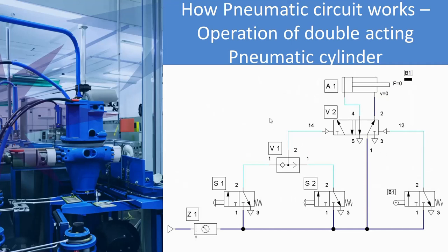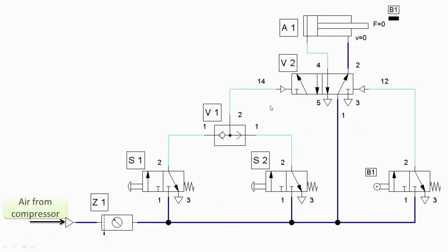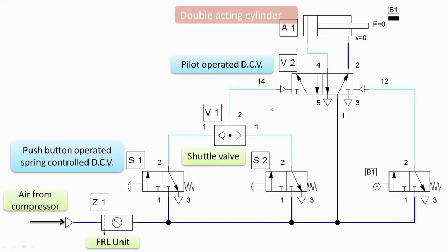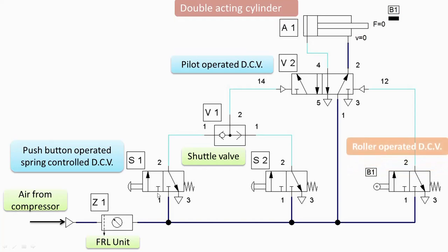In this video we'll see how the pneumatic circuit works. Here we have taken the circuit of operation of a double acting pneumatic cylinder. Various components are shown here. As usual, the air from the compressor will enter into the filter, regulator and lubricator unit where air is cleaned, its pressure is regulated, and it is lubricated.